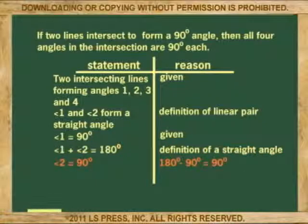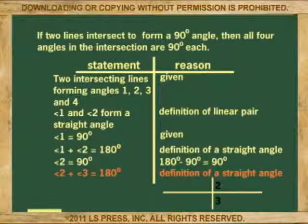Fifth: angle 2 equals 90 degrees. Reason: 180 minus 90 equals 90. Sixth: angle 3 plus angle 4 equals 180 degrees. Reason: definition of a straight angle.